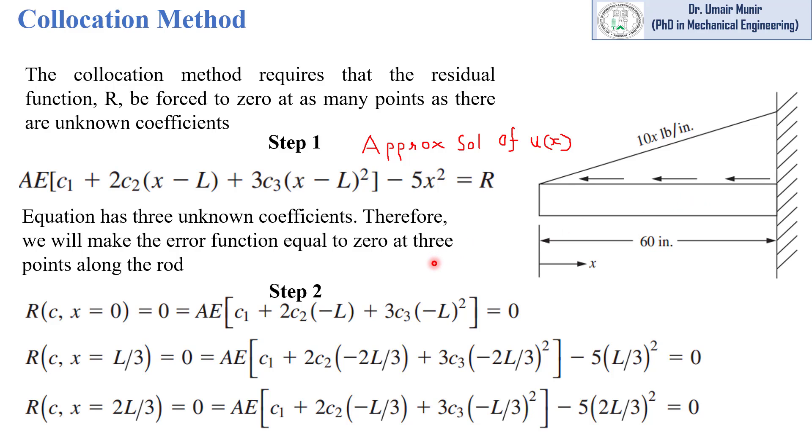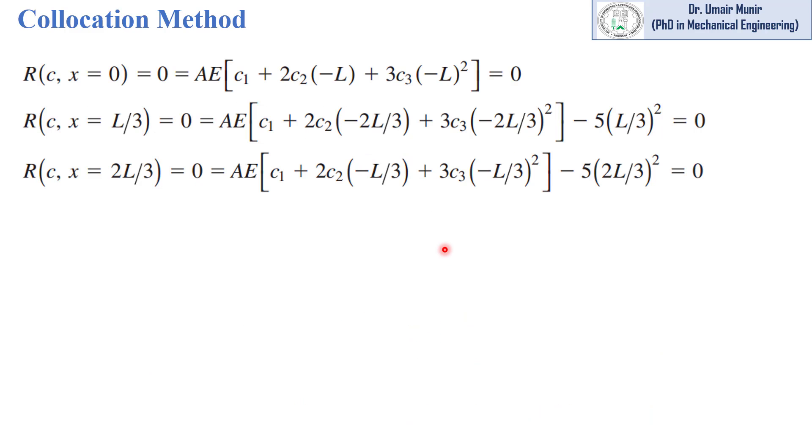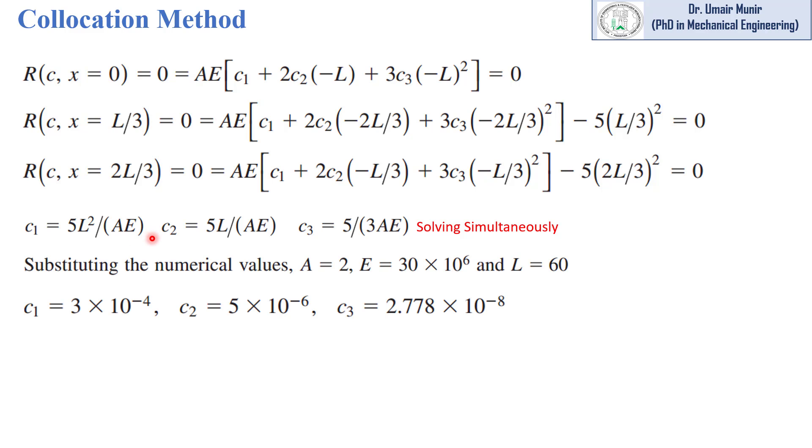When we put these 3 equations equal to 0, that is step 2, we will get 3 equations to solve with 3 unknowns: c1, c2, and c3. When we solve these 3 equations simultaneously, we will get the values of c1, c2, and c3.